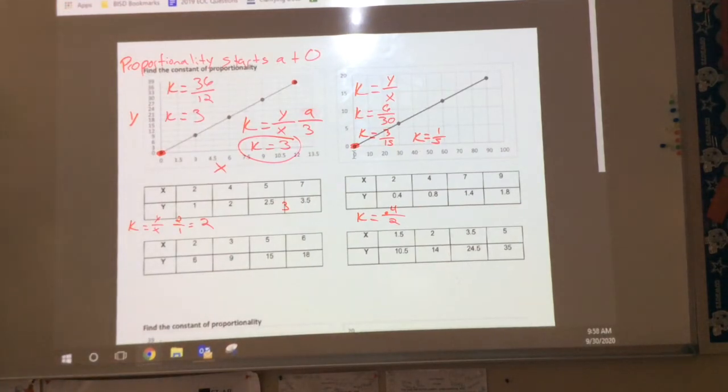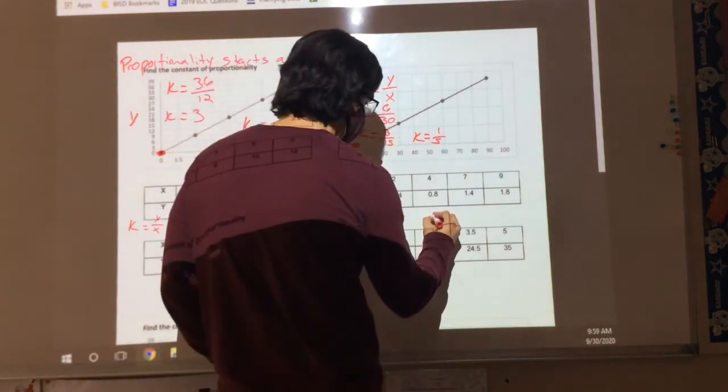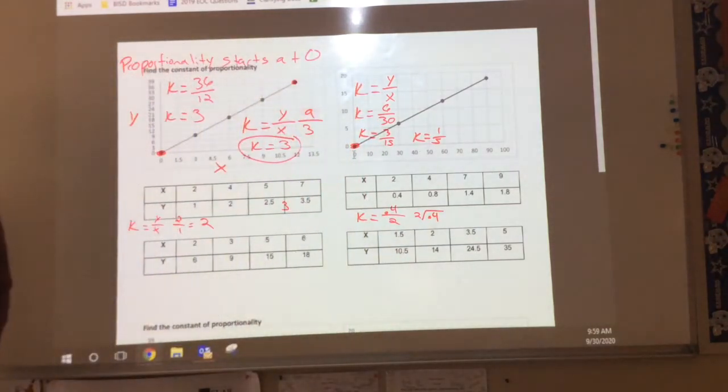Divide, right? Can you do 0.4 divided by 2? Do it. 0.4 divided by 2. 0.4 and then, is it the denominator or the... Top dog always goes in the house. Okay, so... It's easy. How many times does 2 go into 0.4?